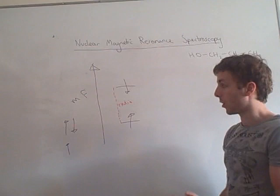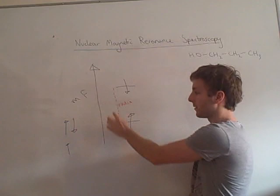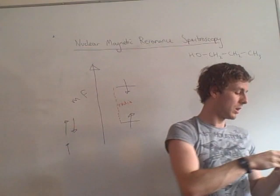So depending on the environment, it will depend essentially on the frequency of this radio wave radiation, the gap between it, and we can use something called a Fourier transform to plop that on a graph, and what you essentially get...